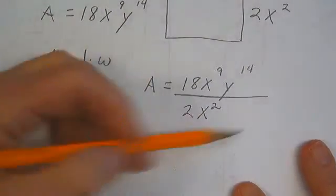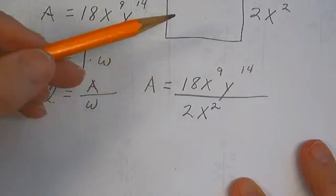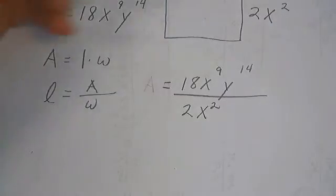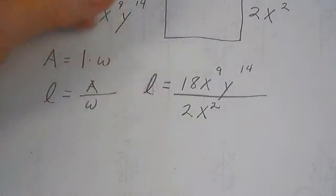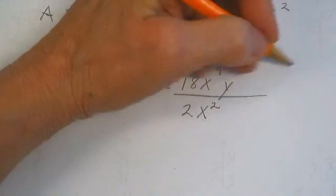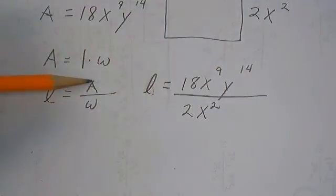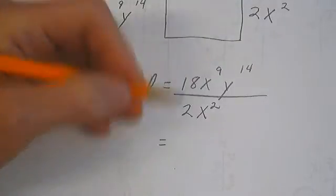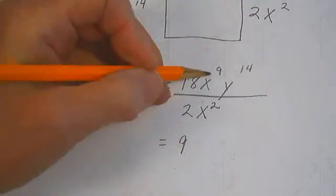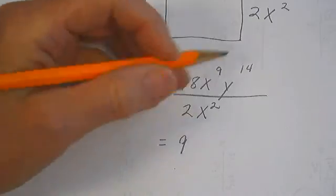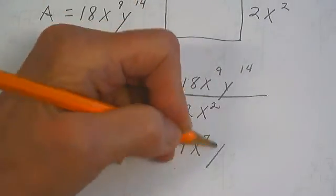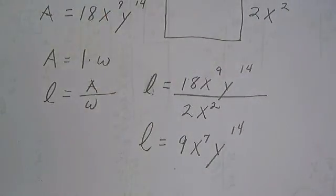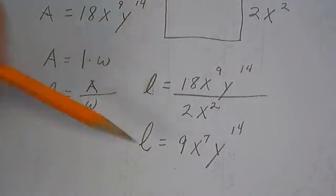Then all we have to do is simplify this expression. Length equals the area divided by the width. So we simplify this expression. 18 divided by 2 is 9. X to the 9th divided by x squared is x to the 7th, and we still have our y to the 14th. Easy peasy. Just don't panic. You can do this.